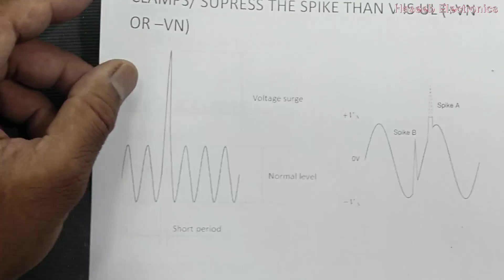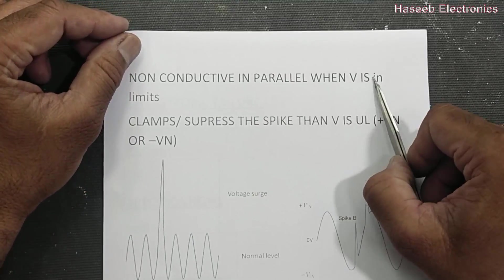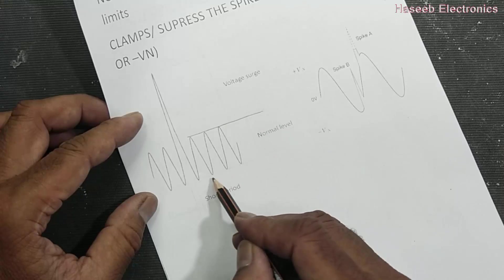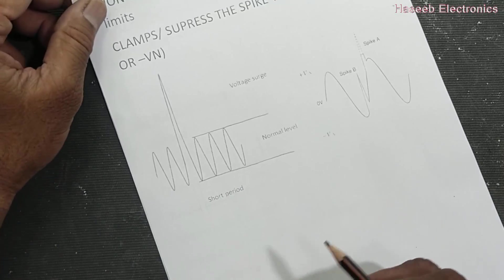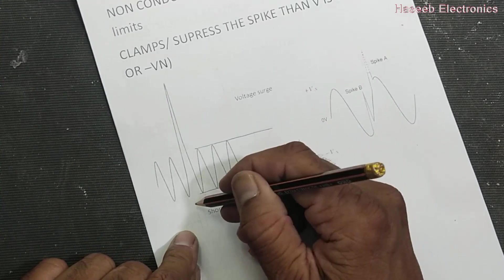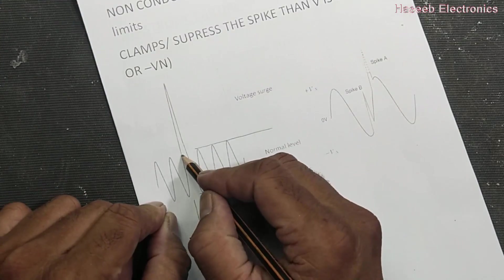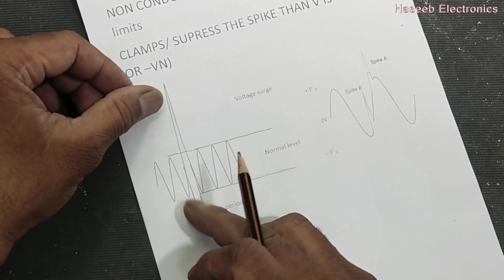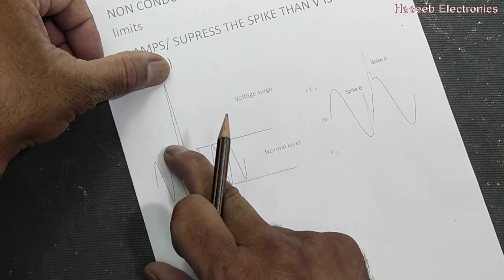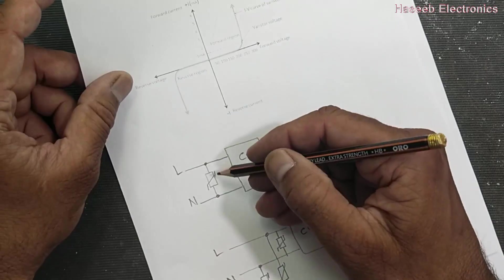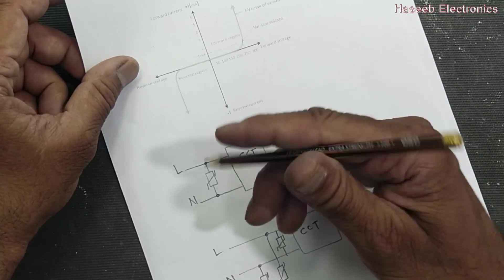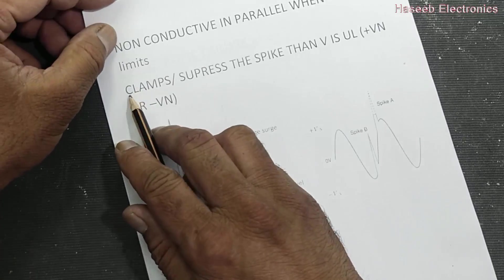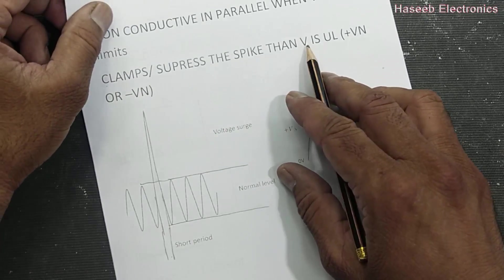Now we can see what a spike is. In normal conditions, in parallel on the line, the voltage is in limit — for example our line voltage is 220 volt. If a slight peak comes in the frequency for a short period, and a spike reaches above the limit, it will clamp — 250 volts will remain in the line and the spike will be clipped off. So it clamps or suppresses the spike that is above the limit.